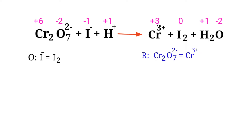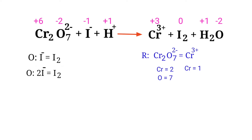Now you can balance the number of atoms in the two half reactions. In the oxidation half reaction, to balance the iodine atoms we need to put a coefficient of 2 in front of I-. The number of atoms are now balanced in the oxidation half reaction.